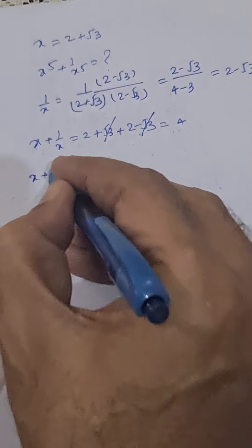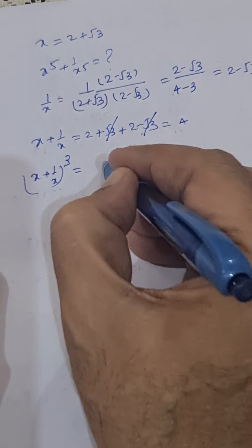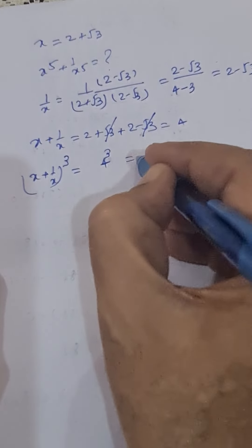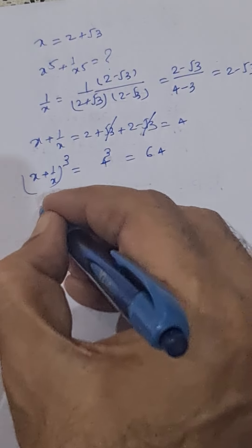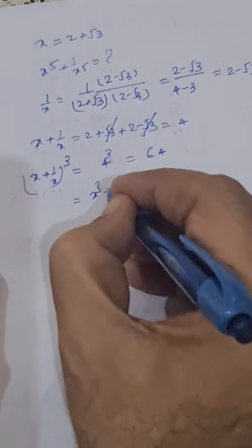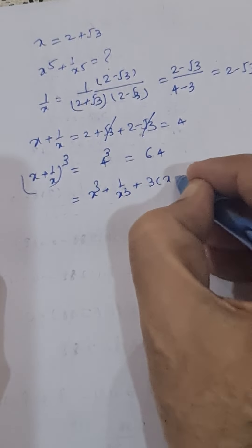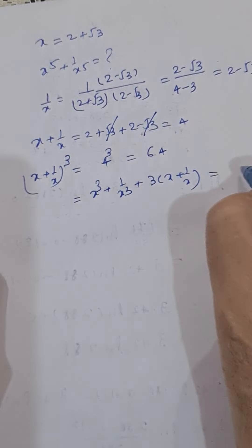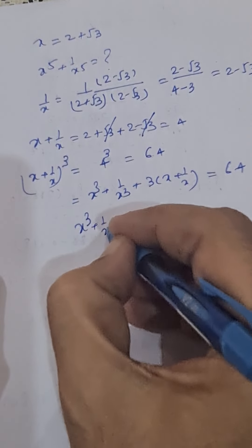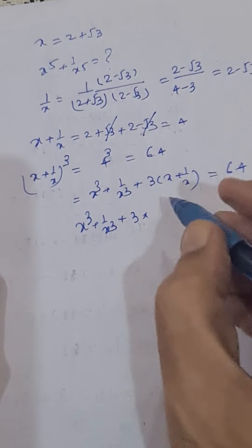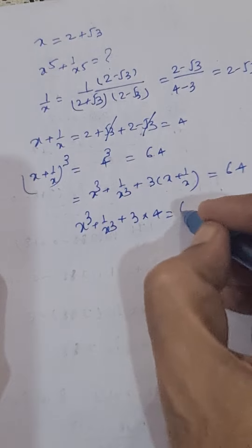Now we cube it. x plus 1 upon x whole cube will be equal to 4 raised to the power 3, that is 64. We can also write this as x cube plus 1 upon x cube plus 3 into x plus 1 upon x equal to 64. So x cube plus 1 upon x cube plus 3 into 4 equals 64.